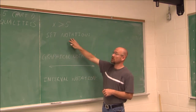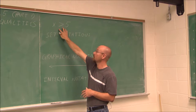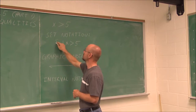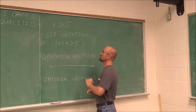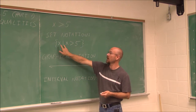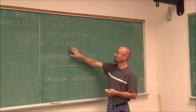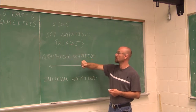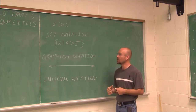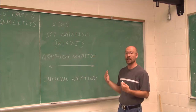The first one is set notation. Set notation is essentially taking this value — which is called algebraic notation — and making it official. We put it in braces, and we write x such that x is greater than 5. This symbol, x with the line, says 'x such that x is greater than 5.' It's kind of an old nomenclature, but it's still standard to write it in set notation like this, and you will be asked to do that.